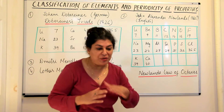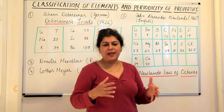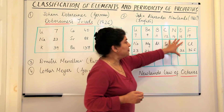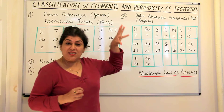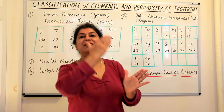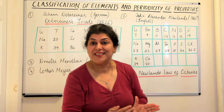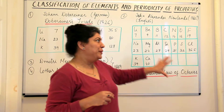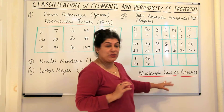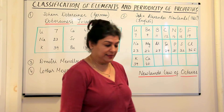It could not be extended further to the other elements. And therefore the periodicity that he described — this is where Newlands, if you really see, he's the one who gave the concept of periodicity: that after a certain period, the properties are repeated. So the concept of periodicity had taken form in the Newlands law of octaves, but it could not be extended beyond calcium.